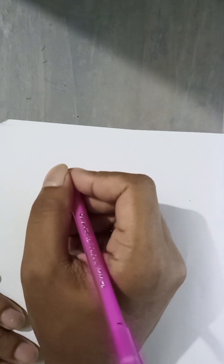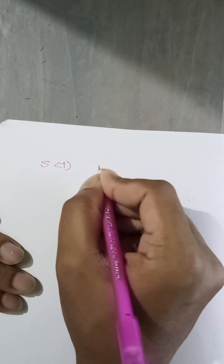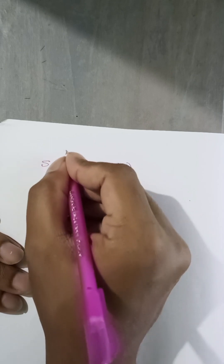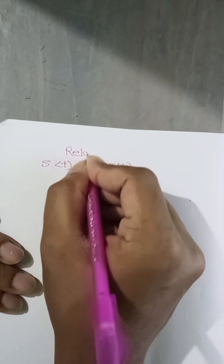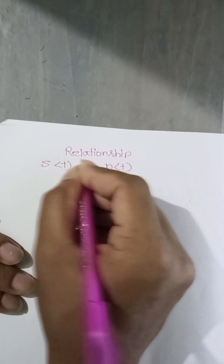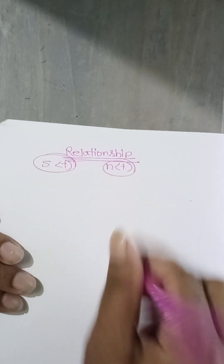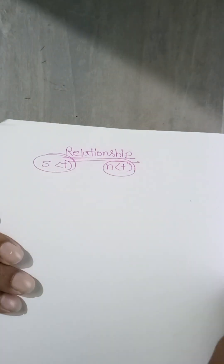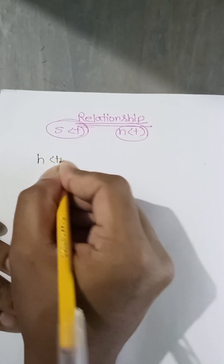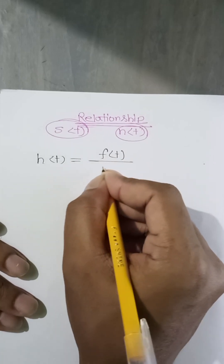Hello everyone, today we will find the relationship between the survival function and the hazard function. By definition, the hazard function h(t) is equal to f(t) divided by S(t).